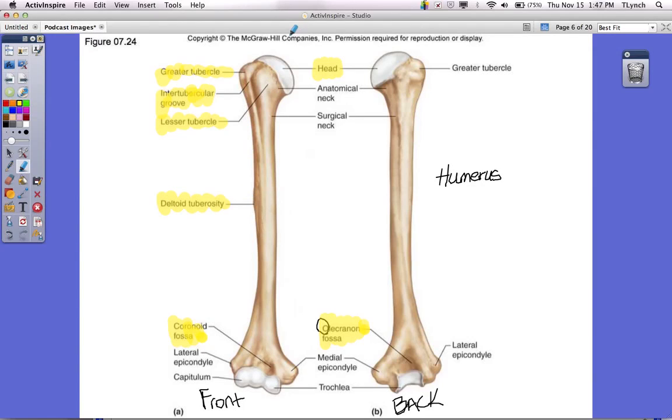There is also what we call a deltoid tuberosity. Tuberosities tend to be bumps on bones. You should have also labeled it. This is actually an attachment point for your deltoid muscle. Your deltoid muscle is your shoulder muscle. It actually wraps around your bone and attaches down here. If you wanted to raise up your arm, the muscle would actually pull on this bone, and then the bone would move this way to help you raise your arm.